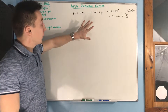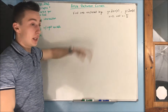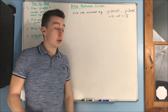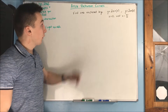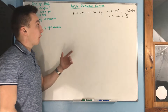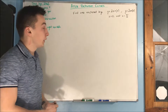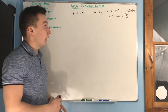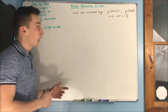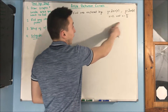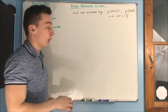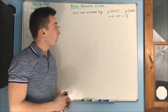In this video, we are going to be doing some example problems finding the area between curves. So we have our first problem up on the board: find the area enclosed by y equals 2 sine of x and y equals 2 cosine of x. We also have our x bounds, which is x equals 0 and x equals pi over 2.